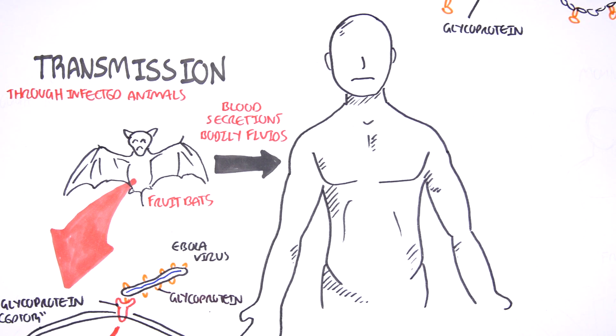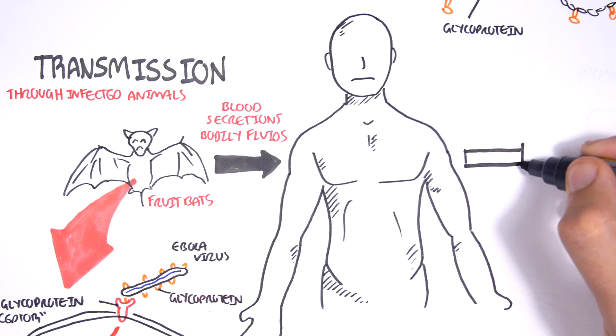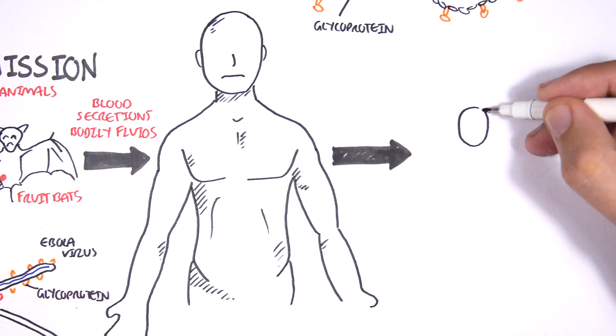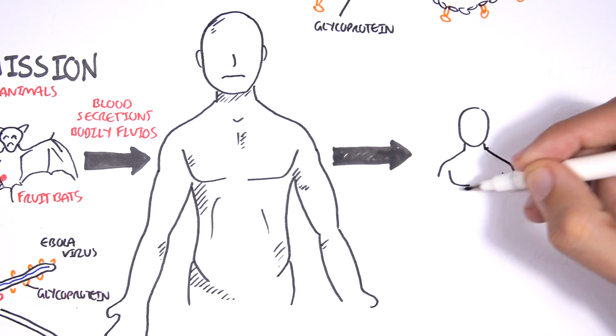The now infected fruit bat can then transmit the Ebola virus to a susceptible human. The Ebola can then spread in the community through human-to-human transmission.